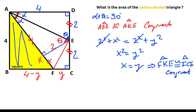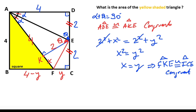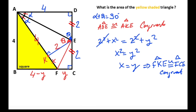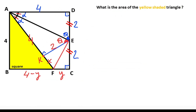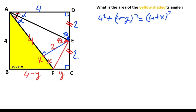So if you focus on this triangle, we can apply the Pythagorean theorem. Therefore: four squared plus (four minus y) whole squared equals (four plus x) whole squared.